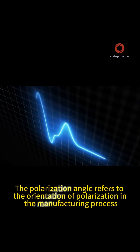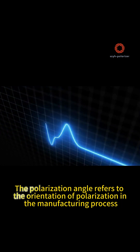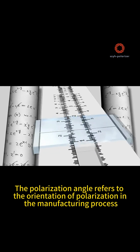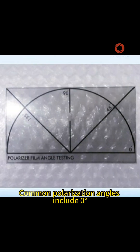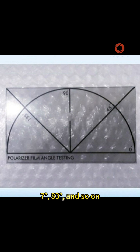The polarization angle refers to the orientation of polarization in the manufacturing process. Common polarization angles include 0 degrees, 90 degrees, 45 degrees, 135 degrees, 7 degrees, 83 degrees, and so on.